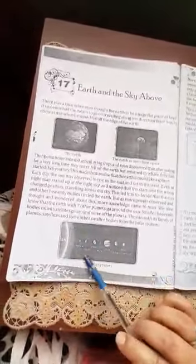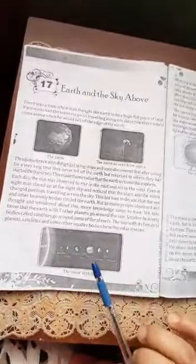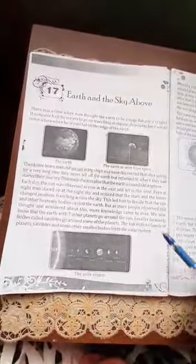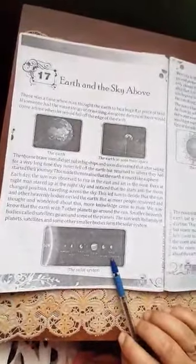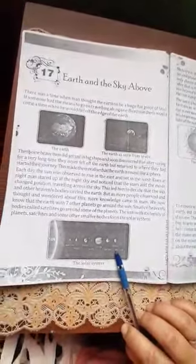Now people know that Earth with its other seven planets go around the sun. These eight planets and moons and other satellites rotate around the sun.